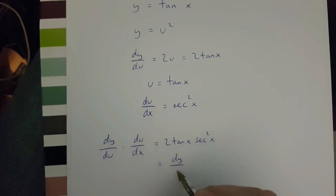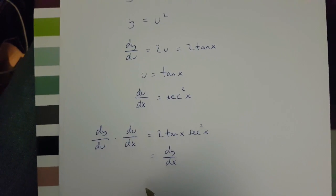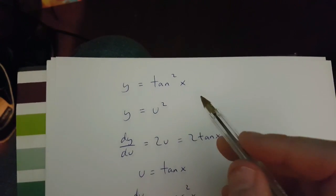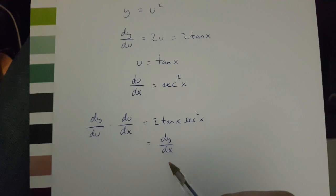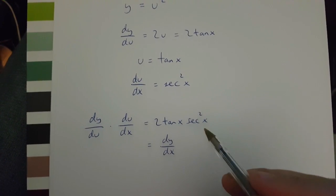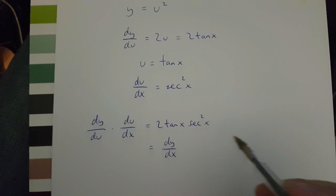Which is dy over dx. This means that y equals tan x squared differentiated is dy over dx equals 2 tan x sec x squared.